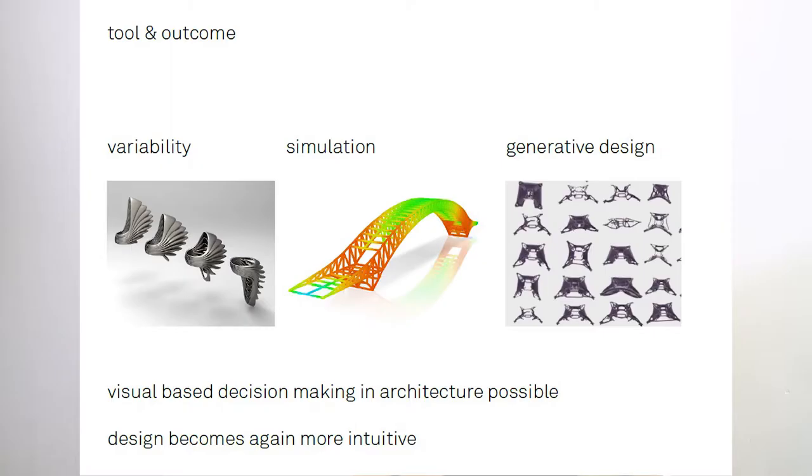So we just came from a time where we simulate everything. And the newest thing in architecture is the generative design, where a computer generates new forms just by given aims and rules. So we are able to do decisions that are just visual-based, and the design becomes more intuitive again.